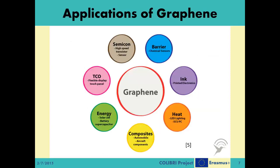There are numerous areas where we can use graphene: solar panels and energy storage through battery designs, lightweight and durable composite materials, flexible display touch panels that can be bent and warped, heating systems, chemical sensors that can detect chemical agents, higher quality inks, and semiconductors for designing smaller and faster transistors.